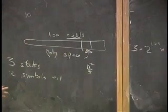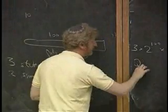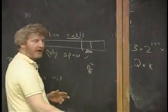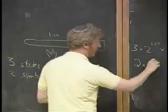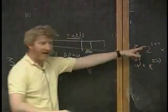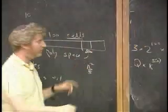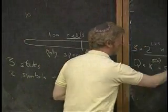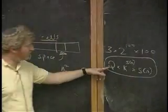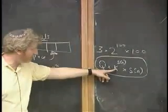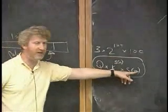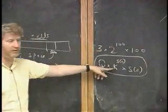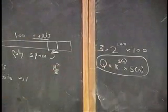I'm going to rewrite this in general. Q is the number of states, K is the number of symbols on the tape, S of n is how much space I have. And this is the number of configurations in a machine with Q states, K symbols, and S of n space. Here's the specific example; here's the general way of looking at it.